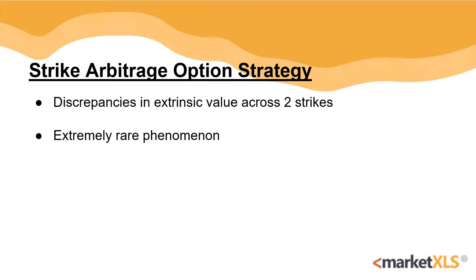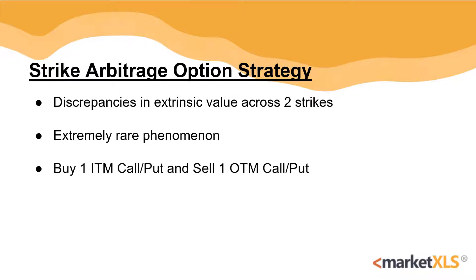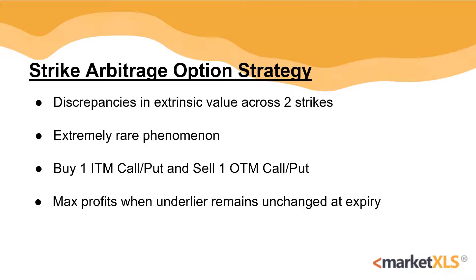To put simply, when the price of out-of-the-money options are higher than the in-the-money options, a possible Strike Arbitrage opportunity may arise. In such cases, we'll buy an in-the-money option and sell an out-of-the-money option such that our net credit results in a positive. A properly executed Strike Arbitrage has zero chance of a loss, with maximum profit occurring when the stock stays stagnant.